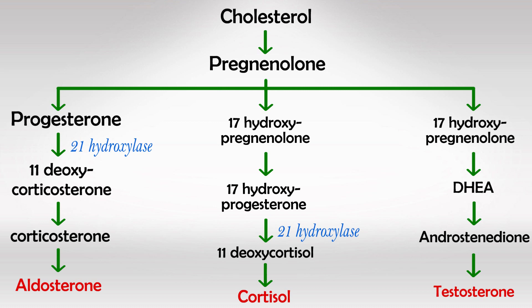The conversion of progesterone into 11-deoxycorticosterone is done by the enzyme 21-hydroxylase. The same enzyme facilitates the conversion of 17-hydroxyprogesterone into 11-deoxycortisol. Simply remember: the enzyme that starts with 21 makes the products that start with 11 — so 21 makes 11.